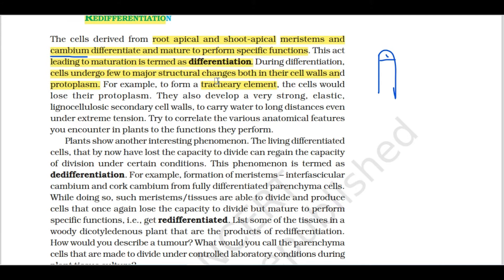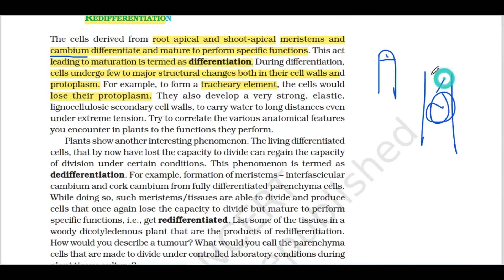The tracheary element is part of the plant's transport system. The cells would lose their protoplasm — the protoplasm is lost. They also develop very strong, elastic, lignocellulosic secondary walls. The outer wall is strong and elastic — lignocellulosic secondary cell walls.